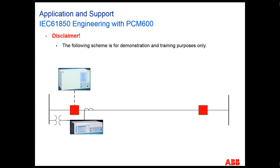The following video will show you how to engineer IEC 61850 with PCM600. To do that, we have a protection scheme which is for demonstration and training purposes only. On this protection scheme, there is an REL650 relay which is in charge of protecting this transmission line, and an REC670 relay which will be publishing the circuit breaker position.